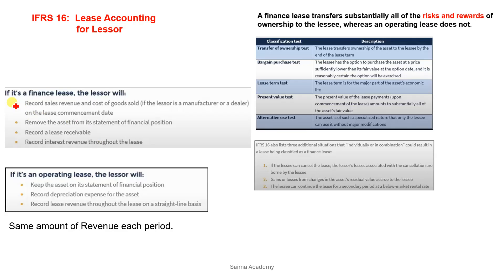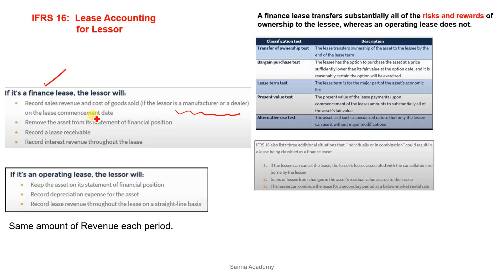Now let's talk about if it's a Finance Lease. First of all, we have to decide whether it is Finance or Operating Lease. Once we have decided that it's a Finance Lease, we then consider whether the Lessor is a Manufacturer or Dealer — meaning he has made the assets and then given them on lease.